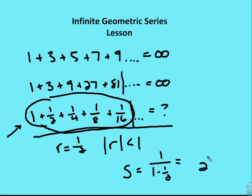So I have 1 over 1 half, and so my answer is 2. So if you add all of the terms, an infinite number of terms, in this sequence, you will come up with a value of 2.